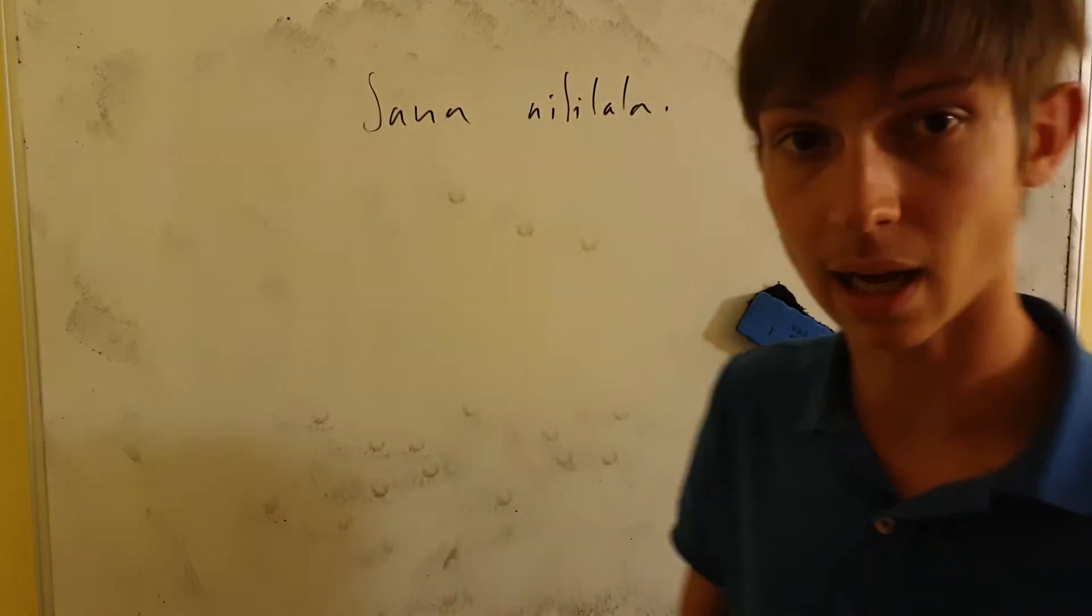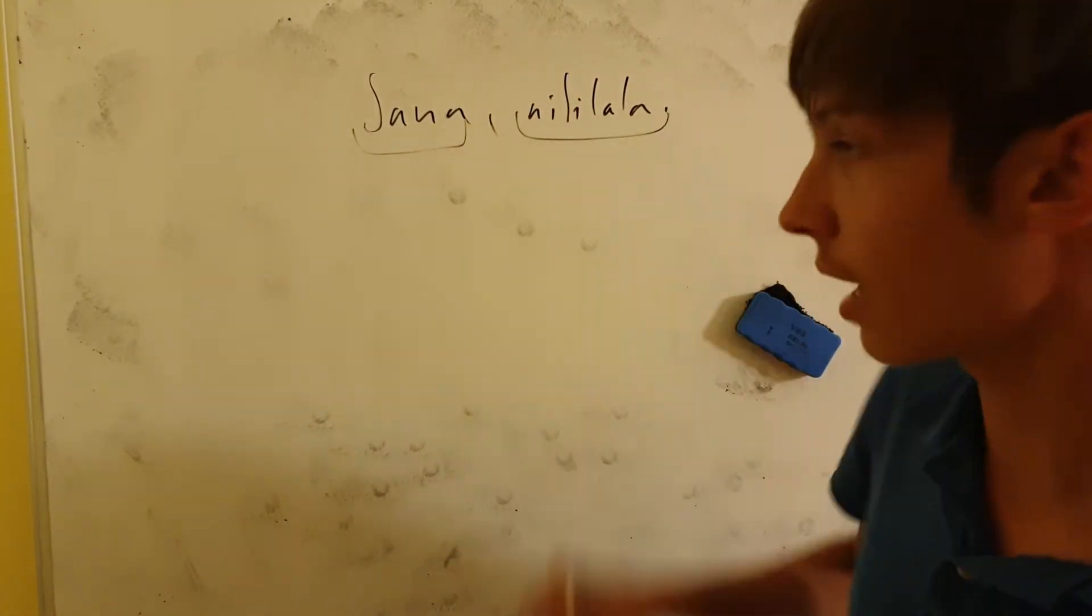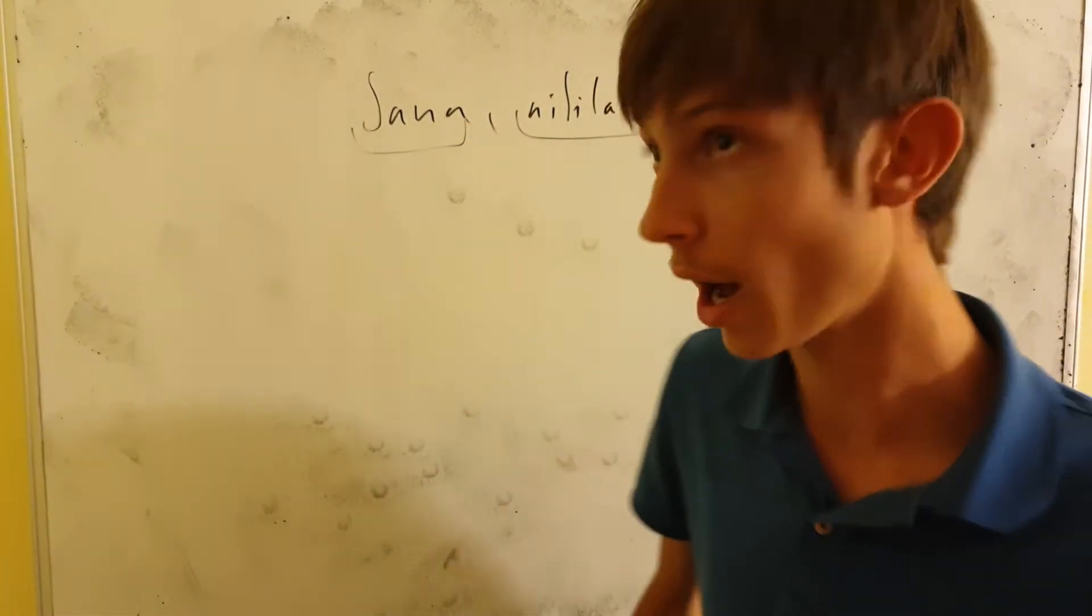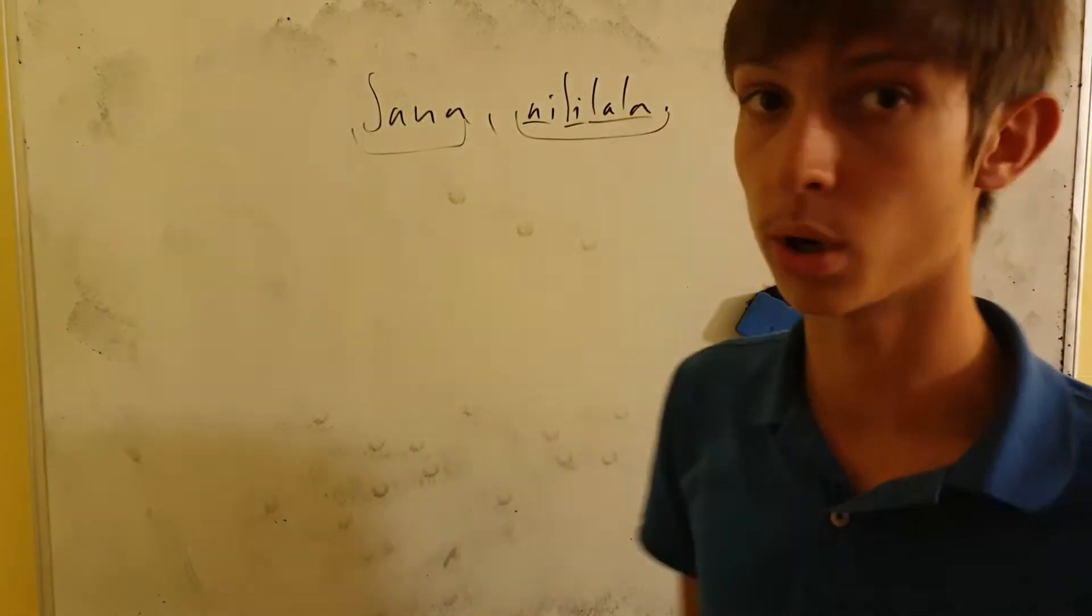So, Jana Nili Lala, it means I slept yesterday. Because Jana is yesterday and then Nili Lala is the verb I slept. Ni is that it's about me, le is past tense and lala is the verb to sleep.